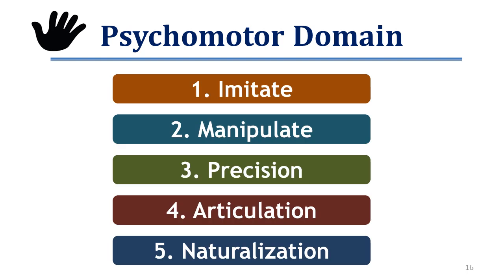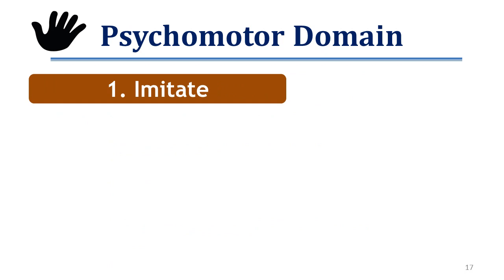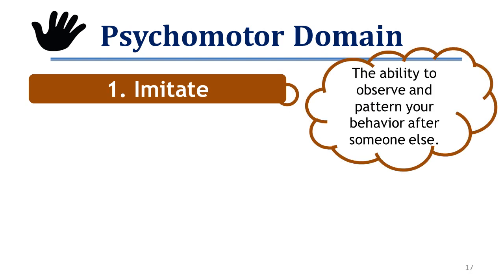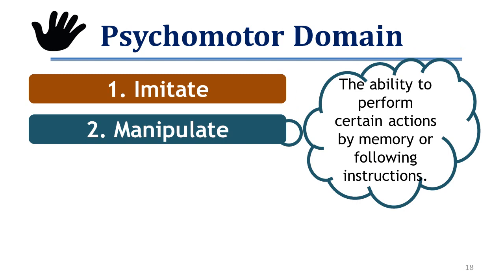The psychomotor domain is another learning domain, divided into five subdomains. First is imitate — the ability to observe and pattern your behavior after someone else, simply copying or replicating the actions of others. Second is manipulate — the ability to perform certain actions by memory or by following instructions, meaning you can do tasks after written or verbal commands.